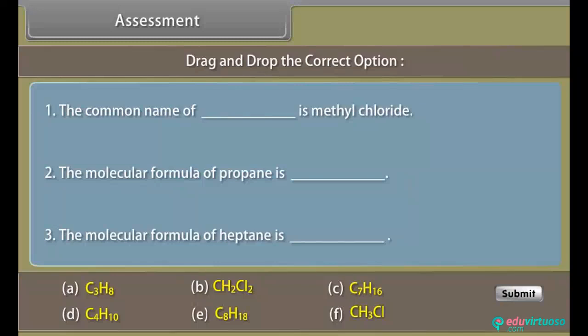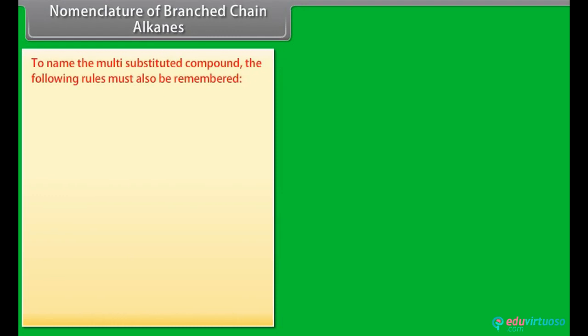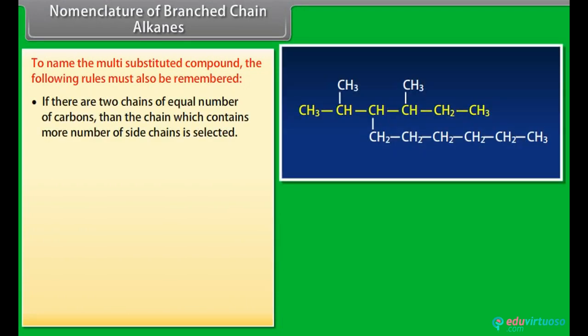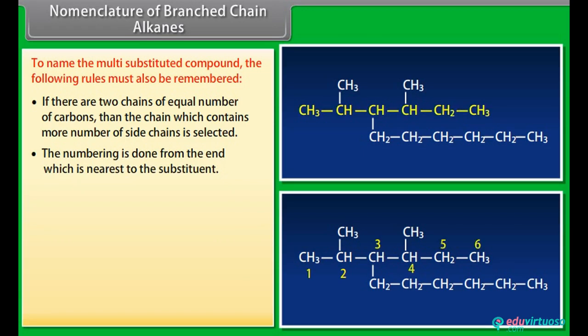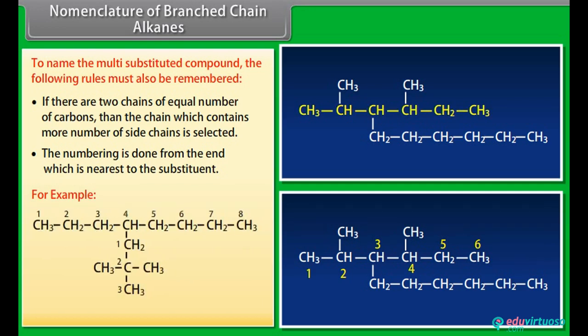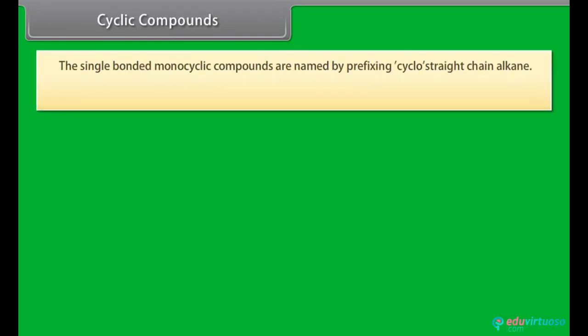Assessment: before proceeding further, let us check how much you have learned. Drag and drop the correct option. To name multi-substituted compounds, the following rules must also be remembered: if there are two chains of equal number of carbons, then the chain which contains more number of side chains is selected. The numbering is done from the end which is nearest to the substituent. For example, the IUPAC name of the given compound is 4-(2,2-dimethylpropyl)octane.